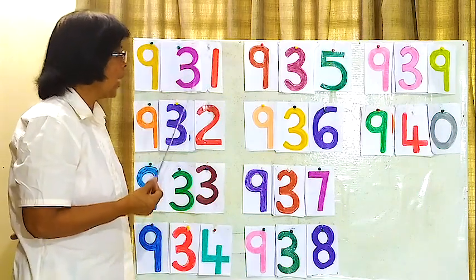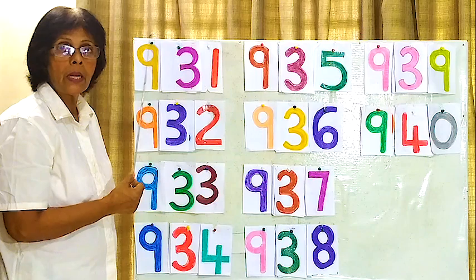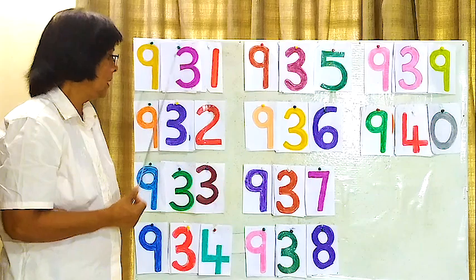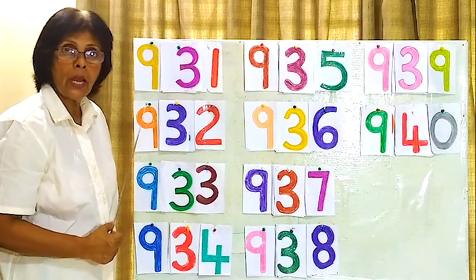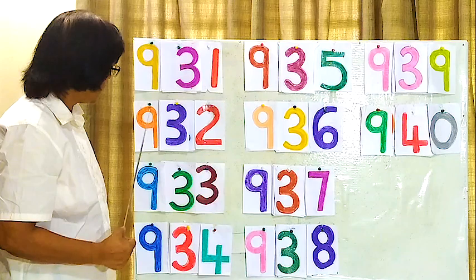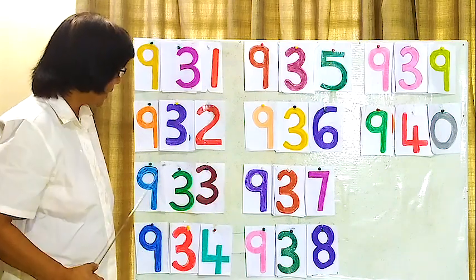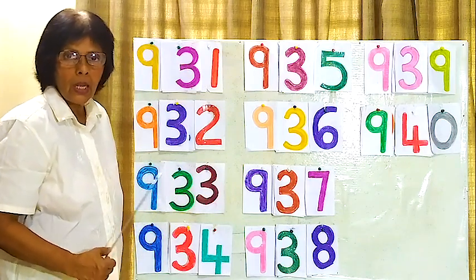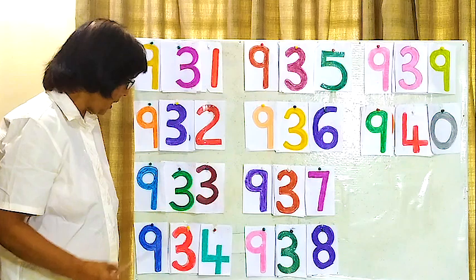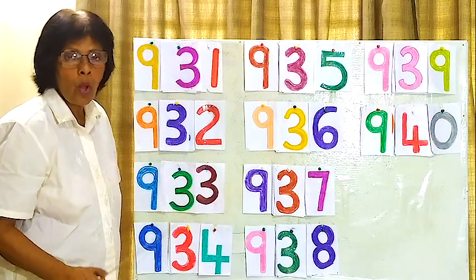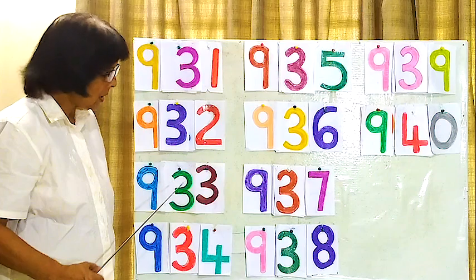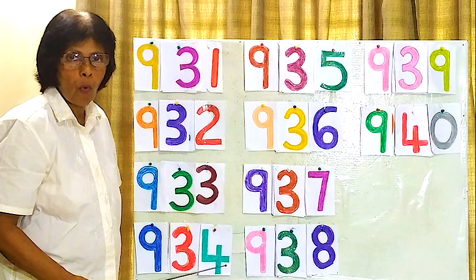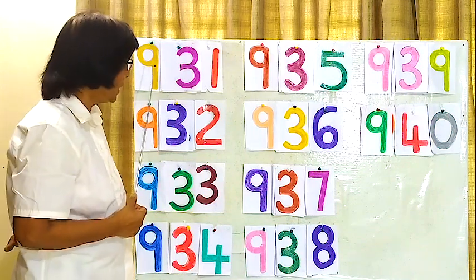931, 931, 931. 932, 932. 933, 933. 934, 934, 934, 934. Now we will read again from the beginning here.